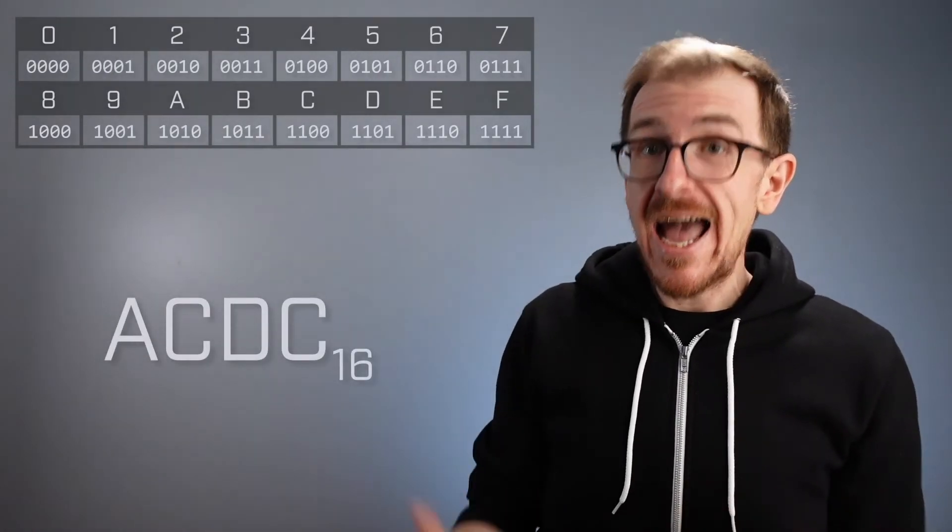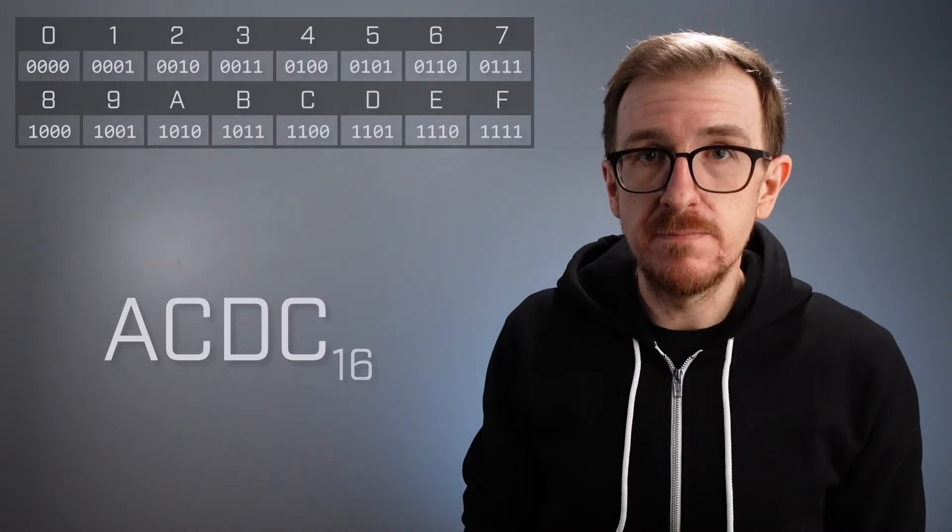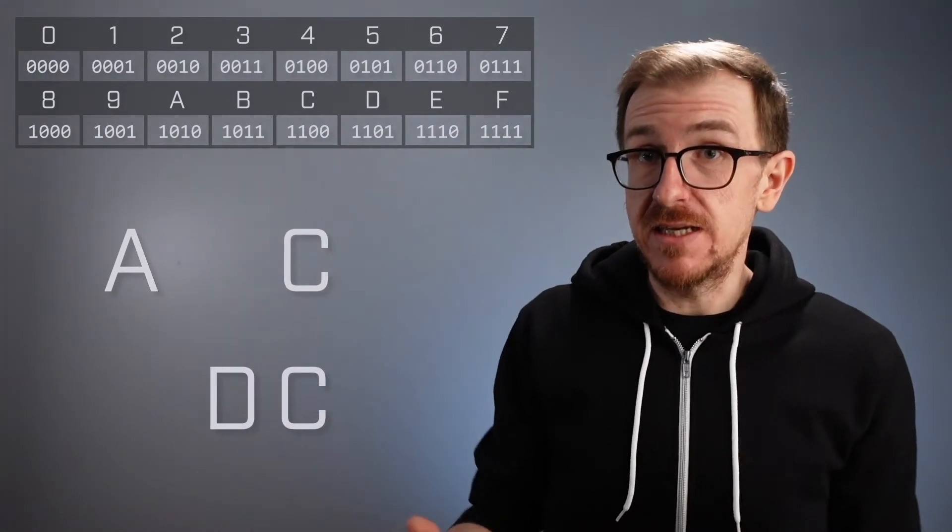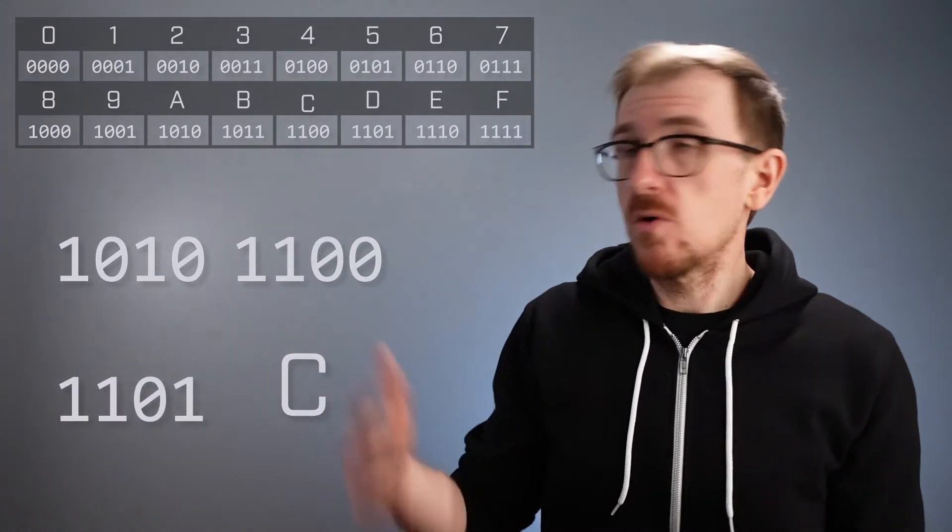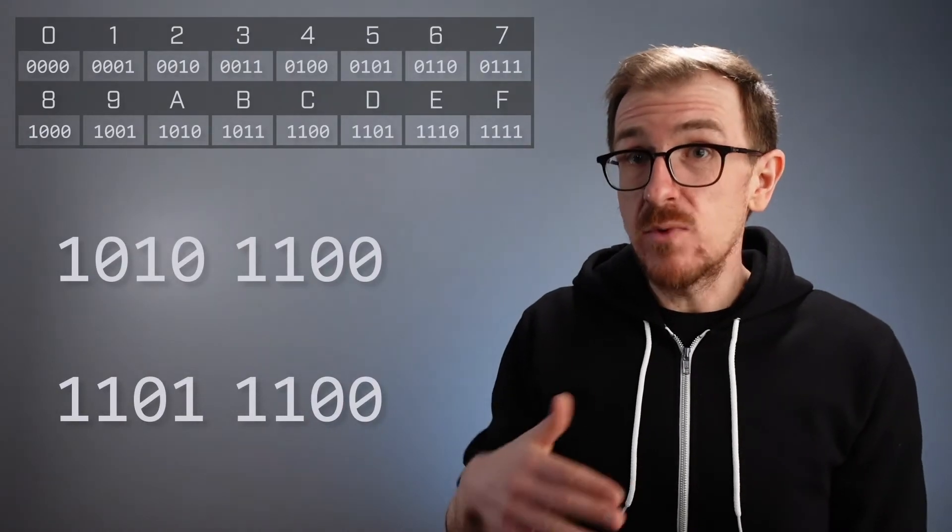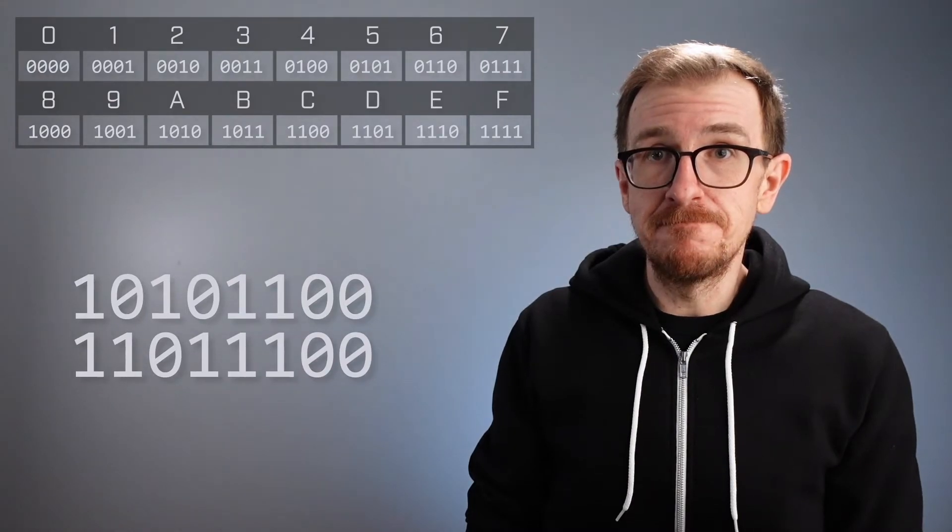Let's use the table to convert the hexadecimal number ACDC directly into binary. First, for clarity, let's split apart each of the digits. Then we replace each digit with its binary equivalent according to the table. Finally, we recombine all the binary digits and the conversion is complete. If we were converting this number to decimal, we'd have to wrangle with some pretty obnoxious powers of 16. Converting it directly into binary, on the other hand, is easy as we only need to perform a simple conversion on each of the digits one at a time.